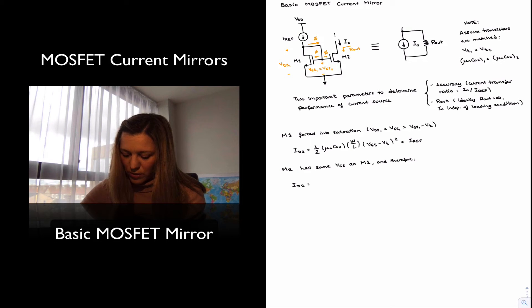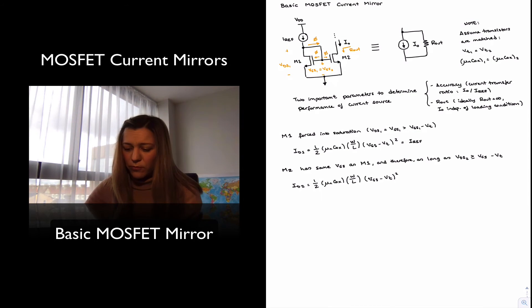And therefore, my ID two is going to be equal to one half of mu n C ox with over length VGS minus VT squared. Now this equation assumes that transistor M2 is also in saturation. So perhaps we will need to make a note that this only happens as long as VDS2 is greater than or equal to VGS2 minus VT. Right? Or VGS minus VT, because we've already concluded that the VGS is the same for both transistors. So as long as my drain voltage at the output is sufficiently high to bring M2 out of the triode region and into saturation, then I have this is the expression for my current for ID two.